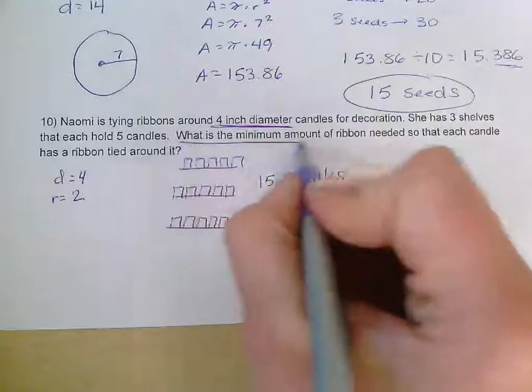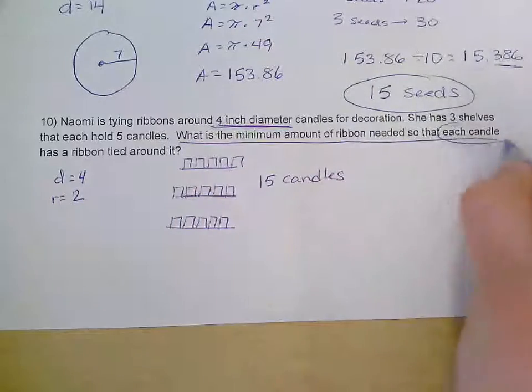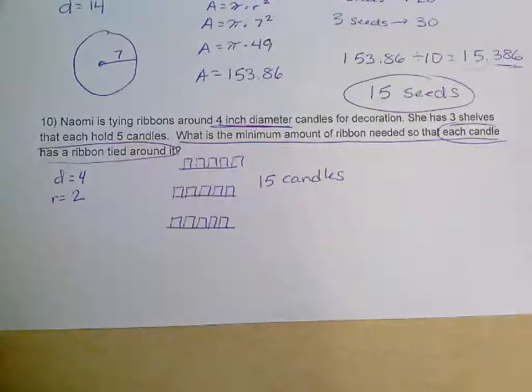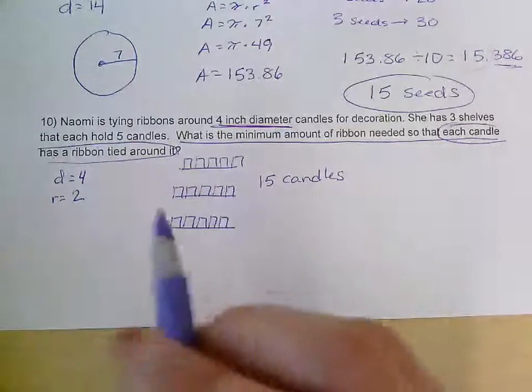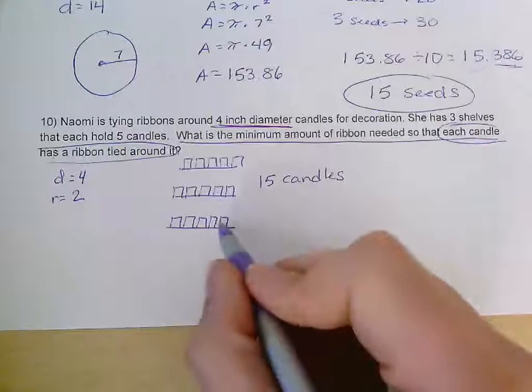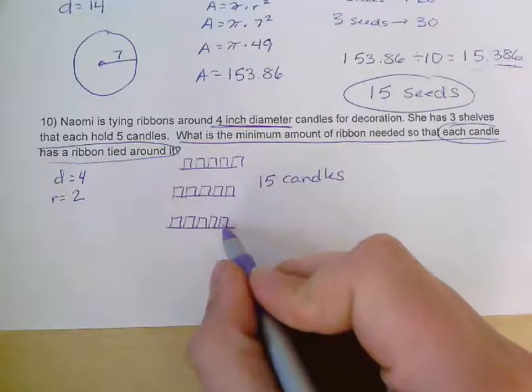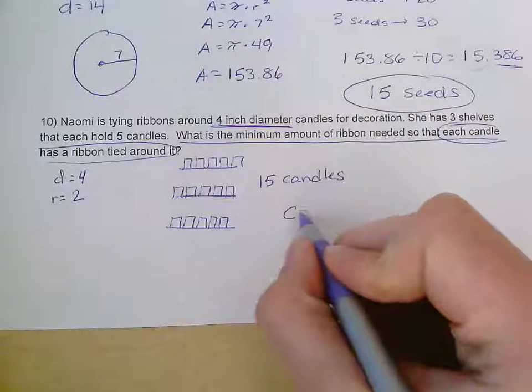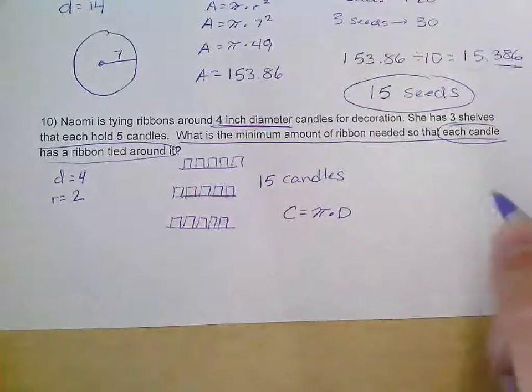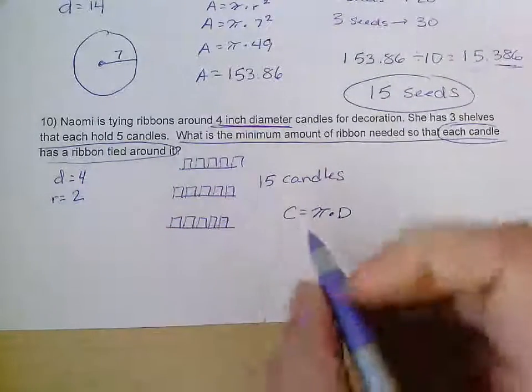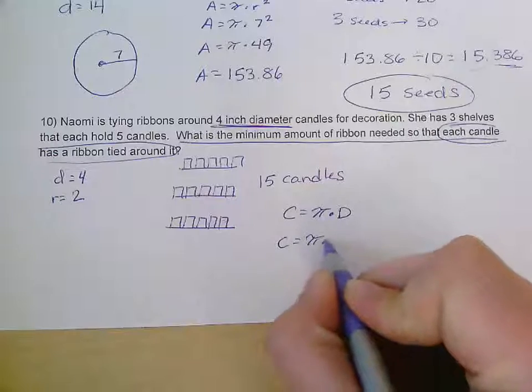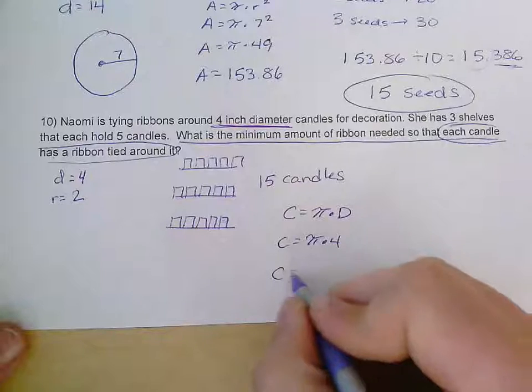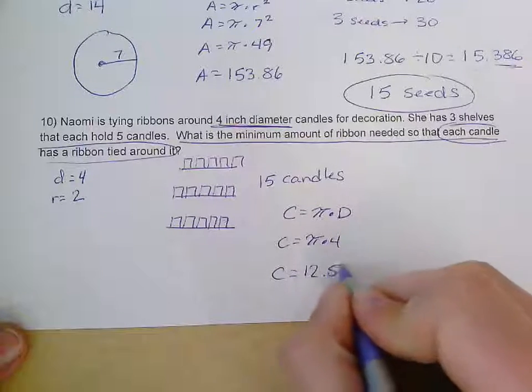Our question, though, is what is the minimum amount of ribbon she needs so each candle can have a ribbon tied around it? That means all 15 have to have a ribbon around them. And if we're thinking about the outside of a candle, tying it around this candle, you can't go through the middle. You're not going to fill the entire thing. We need to know the circumference. So circumference is equal to pi times diameter. My diameter from over here is four. So circumference is equal to pi times four. And that's going to give us that circumference is 12.56.